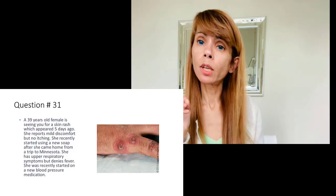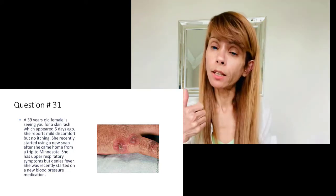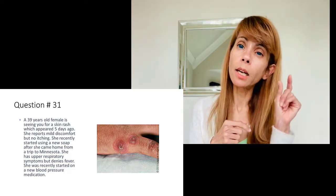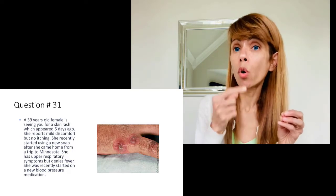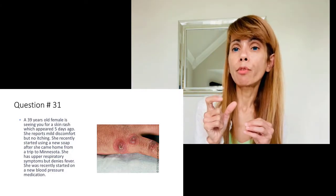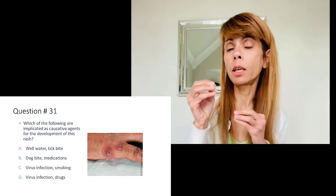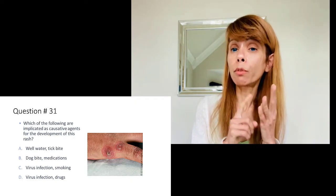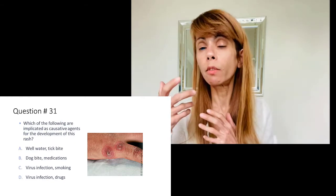This patient has a peculiar target lesion on his limb. First identify the lesion: it is an erythematous, essentially macular target lesion called erythema multiforme. As the name 'multiforme' suggests, it can have multiple causes. The question asks which combination of etiologies causes this lesion. Drugs and viral infections can cause erythema multiforme — that is the correct answer. The other answer choices are not accurate causes of target lesions.